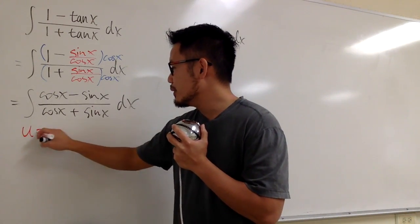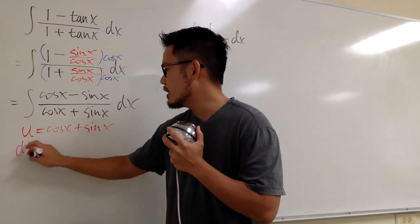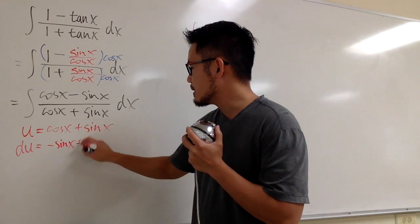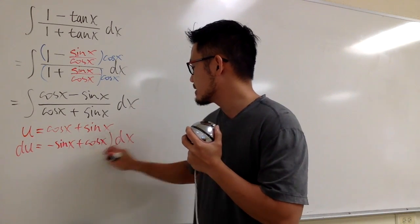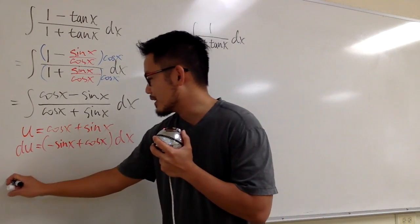So the u equals to the whole denominator, which is cos x plus sin x, and then differentiate both sides. We get the derivative of this, which is negative sin x, and then derivative of that, which is plus cos x dx. Right? And I'm not going to isolate dx, because otherwise I'll run out of space. So let me do it this way right here for you guys.